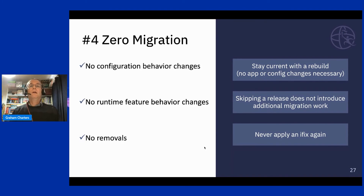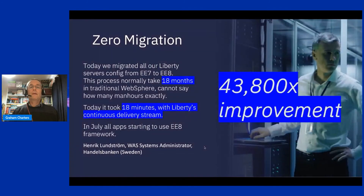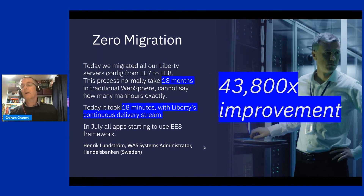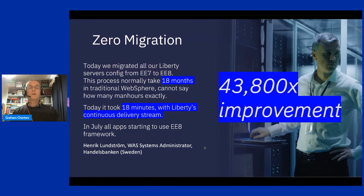If there's a critical security fix, we repackage it and re-release the Docker images — and we actually update the Docker images not just every four weeks but every week. You don't need to take our word for it: Handelsbank used to use traditional WebSphere and it took them 18 months to plan and execute a migration. After moving to Liberty — also migrating from Java EE 7 to Java EE 8 — they did it in 18 minutes for all of their applications.